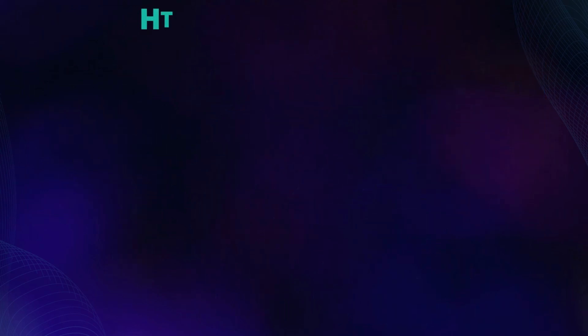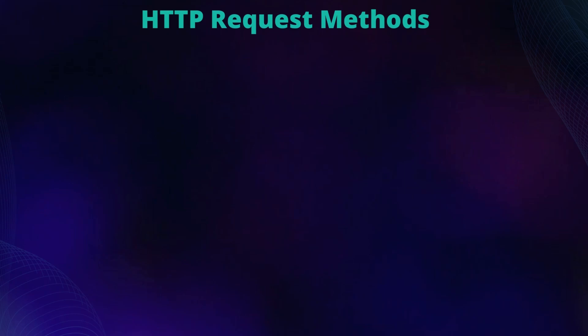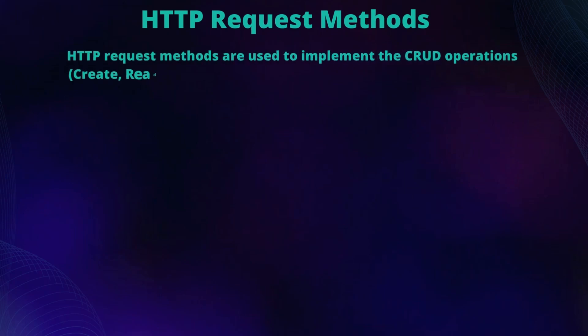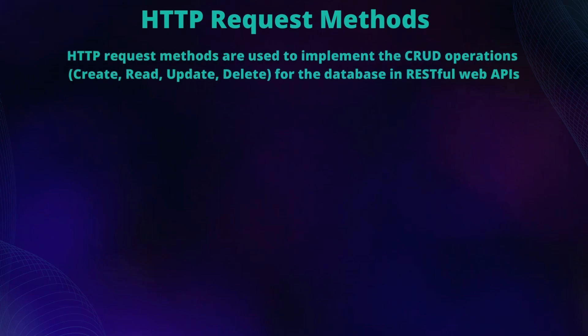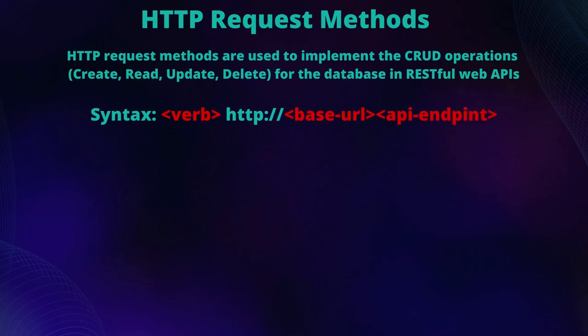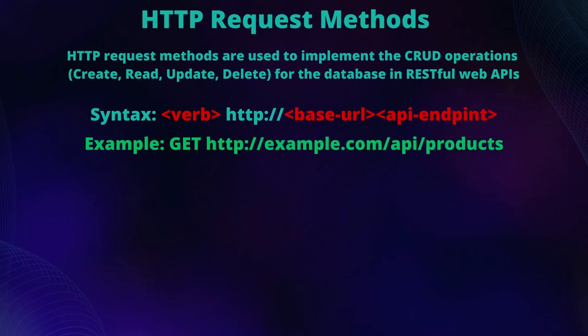Alright, let's take a look at HTTP requests. HTTP stands for Hypertext Transfer Protocol. HTTP request methods are used to implement the CRUD operations — create, read, update, and delete — for the database. HTTP requests consist of a verb, a base URL, and the API endpoint. Here is an example of a very simple HTTP request method.